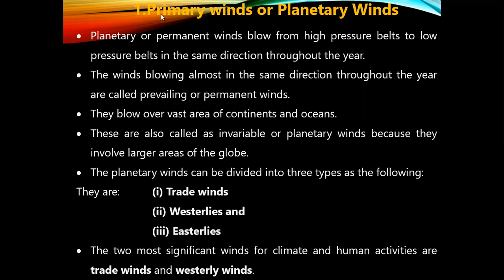The planetary winds can be divided into three types: trade winds, westerlies, and easterlies. The two most significant winds for climate and human activities are trade winds and westerly winds.